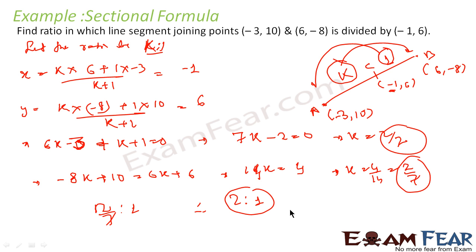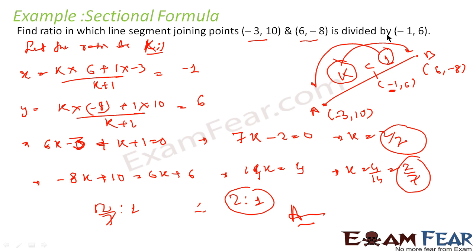This is my answer. So this line segment divides the points (-3, 10) and (6, -8) in a ratio of 2 is to 7.